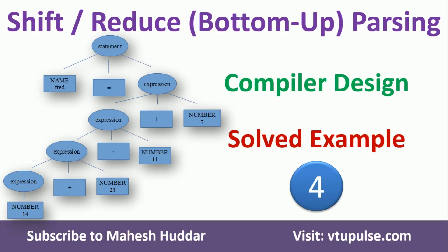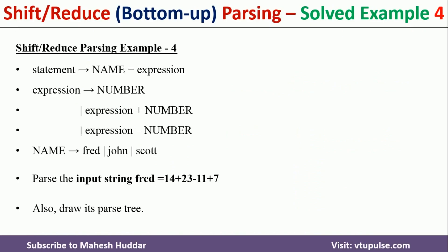Hi, welcome back. In this video I will discuss how to apply shift-reduce, or bottom-up parsing, to validate the given input with respect to the given grammar. This is solved example number 4; the link for other solved examples is given in the description below.